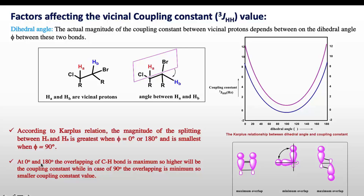At 0 degrees and 180 degrees the overlapping between C-H bonds is maximum. Higher the coupling constant here because higher the overlapping between the C-H orbitals at 0 and 180 degrees. At 90 degrees the overlapping is minimum, so the coupling constant value is smaller.